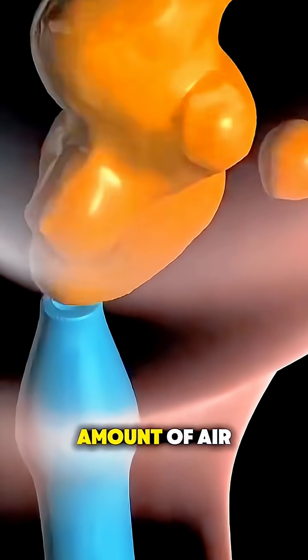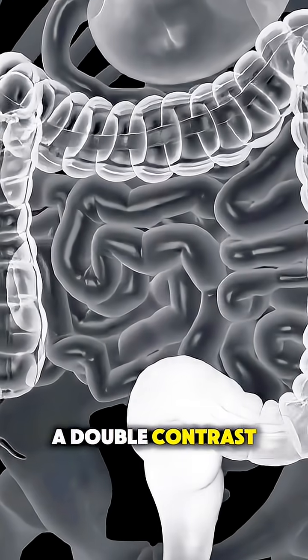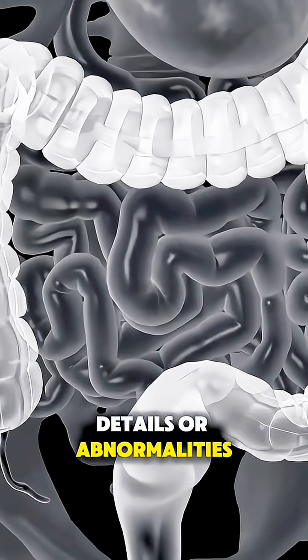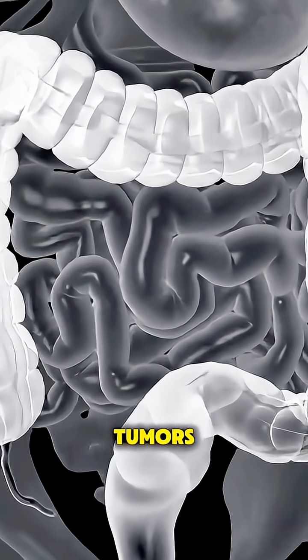Sometimes, a small amount of air is also added. This is called a double-contrast barium enema, and it helps highlight even tiny details or abnormalities like polyps or tumors.